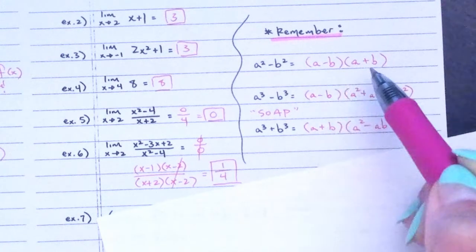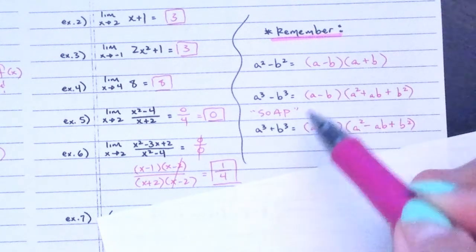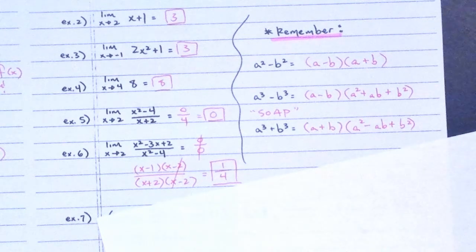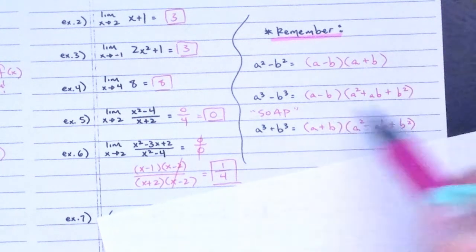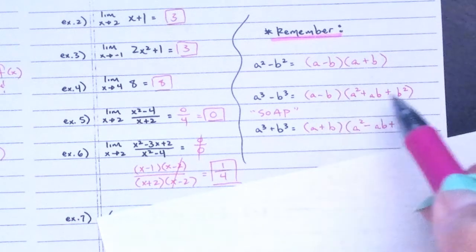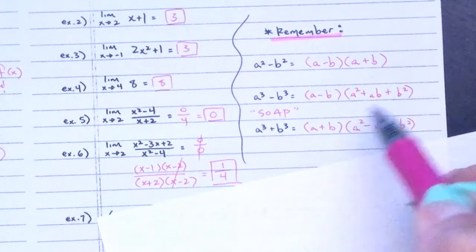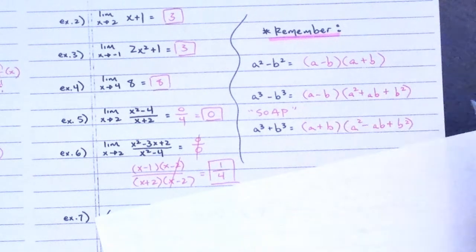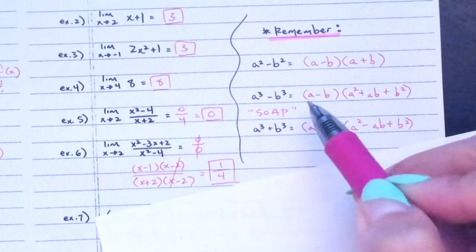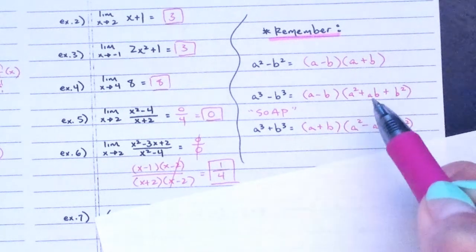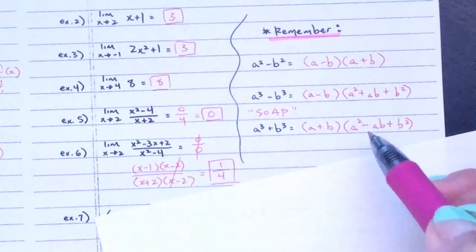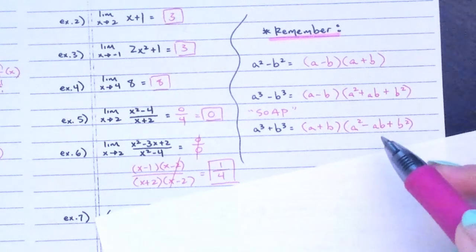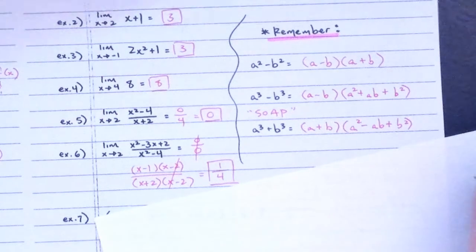Factoring reminders: here's your difference of squares, difference of cubes, and sum of cubes. Remember SOAP — same sign, opposite sign, always positive. In the formulas, a and b are the base terms: a squared, b squared, and ab. Do not put a number in front of the ab term.